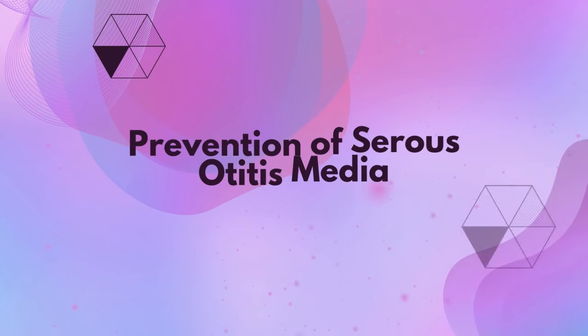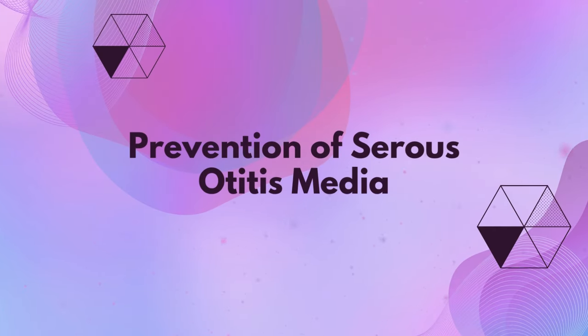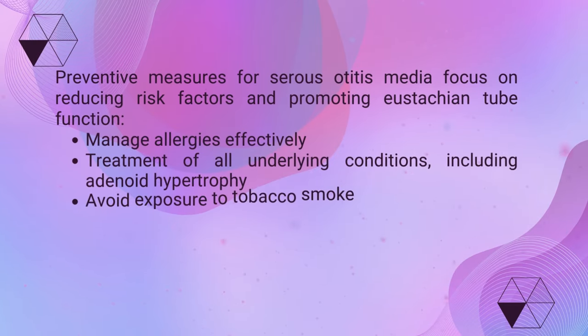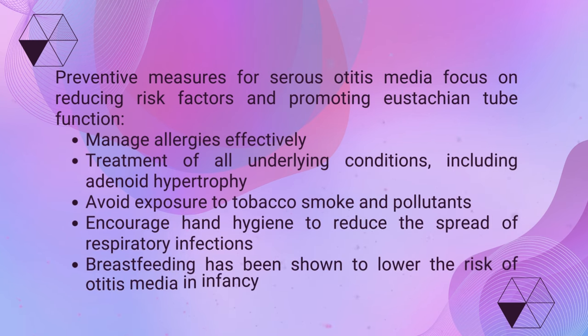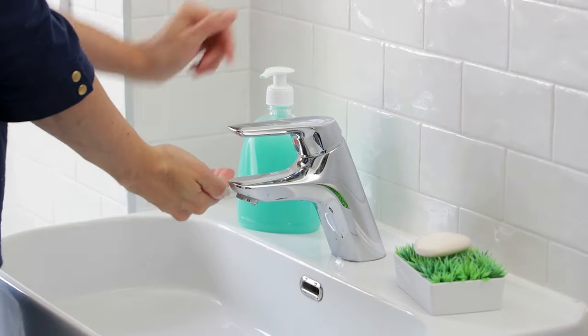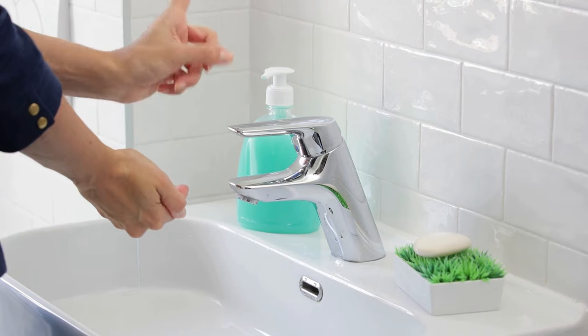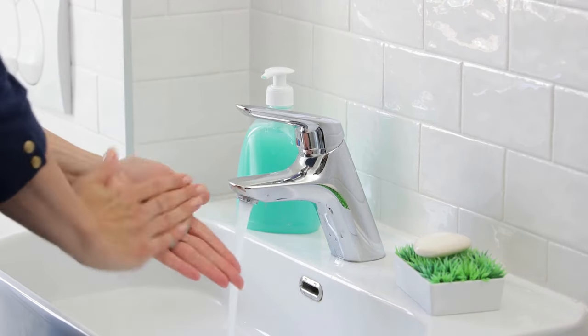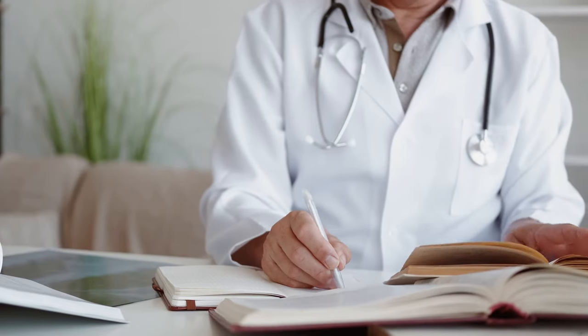As always, consulting with a qualified pediatric ENT specialist is crucial for making informed decisions about the best approach to managing chronic ear infections and related conditions in children. Preventive measures for serous otitis media focus on reducing risk factors and promoting eustachian tube function: treatment of all underlying conditions including adenoid hypertrophy, managing allergies effectively, avoiding exposure to tobacco smoke and pollutants, and encouraging hand hygiene to reduce the spread of respiratory infections. Breastfeeding has also been shown to lower the risk of otitis media in infancy.